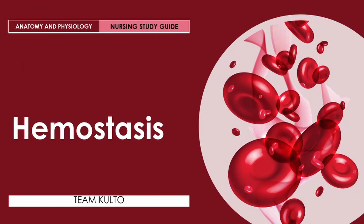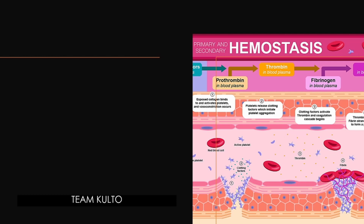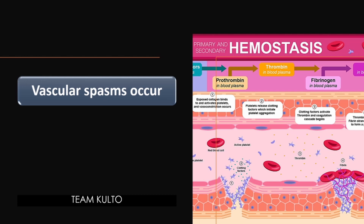Now we're going to talk about hemostasis. When a blood vessel is damaged and connective tissue in the vessel wall is exposed to the blood, the multi-step process of hemostasis begins. First, vascular spasms occur — the immediate response to blood vessel injury is vasoconstriction, which causes the blood vessel to go into spasms. The spasms narrow the blood vessel, decreasing blood loss until clotting can occur.